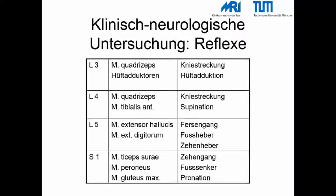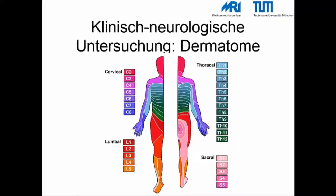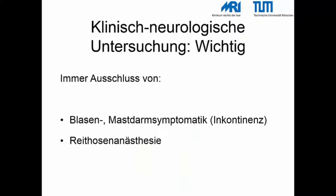Für die klinisch-neurologische Untersuchung ist die Kenntnis der Kennreflexe notwendig. Die unterschiedliche Höhe der Verletzung kann den Ausfall unterschiedlicher Funktionen bedingen. Potenzielle Ausfälle sollten entlang der typischen Dermatome dokumentiert werden. Von größter Wichtigkeit ist es, immer Blasen- und Mastdarmstörungen auszuschließen sowie gezielt nach einer Reithosenanästhesie zu fahnden.